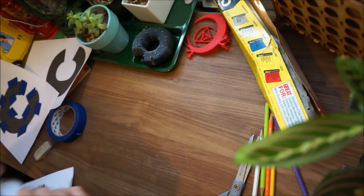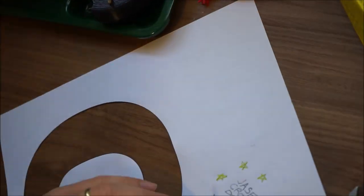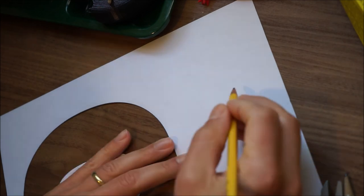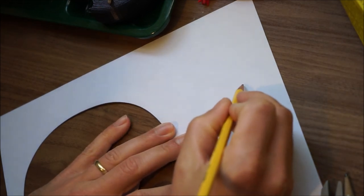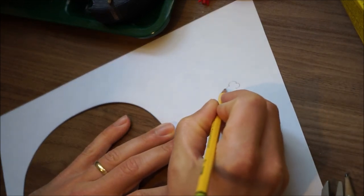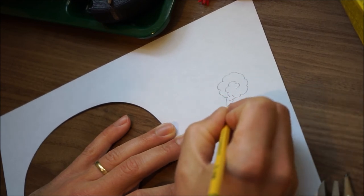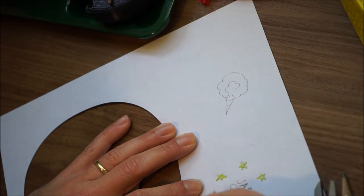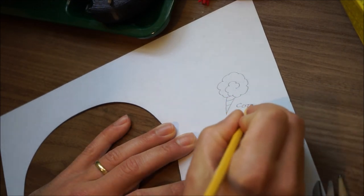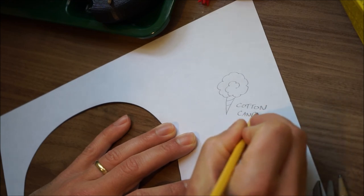But now we need to draw some objects. We need to draw some different drawings that start with the letter C because that's our project for today. Can I get some suggestions? I think I heard that one. So I'm going to start drawing this. Maybe you can guess what it is at home. Is that a cloud? No, it's not a cloud. Cotton candy, good guess from the back.